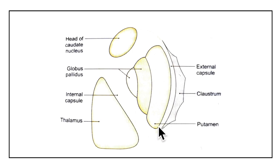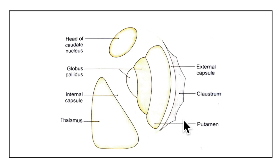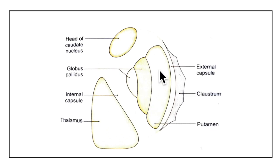The lateral surface is convex and is related to the external capsule, the claustrum, the outermost capsule, and the insula. It is grooved by the lateral striate arteries. The medial surface is more convex and is related to the internal capsule, the caudate nucleus, and the thalamus. The inferior surface is related to the sublentiform part of the internal capsule, which separates it from the optic tract, the tail of the caudate nucleus, and the inferior horn of the lateral ventricle.